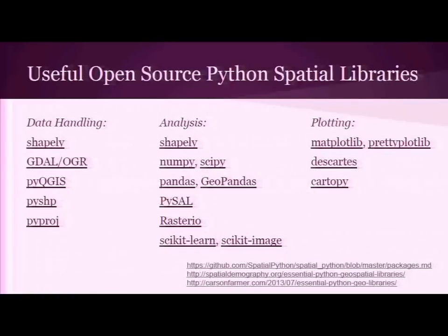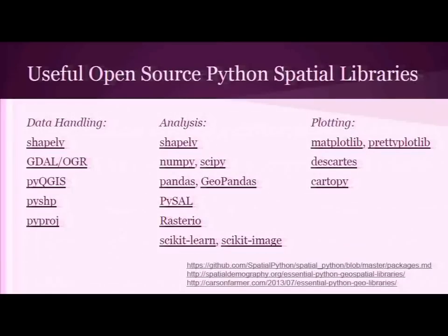This is a list of different spatial libraries in Python — by no means exhaustive, there are a lot of them. I've included links to all of these, and since it'll be posted on the talk page you're welcome to download and share it. If you have others you feel should be added, please let me know. I was highlighting ones I commonly use and see frequently in examples. PySAL and Rasterio are listed here, and those are the two examples I'm going to talk about next.